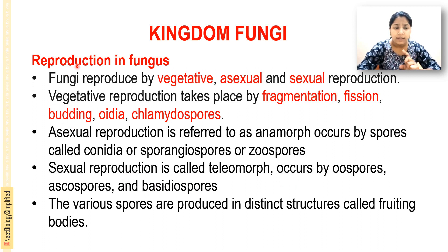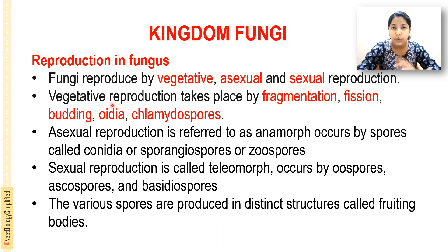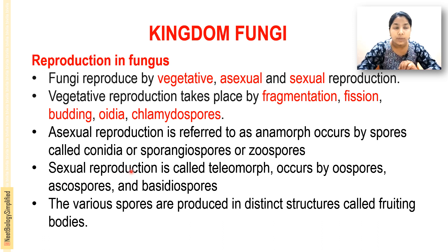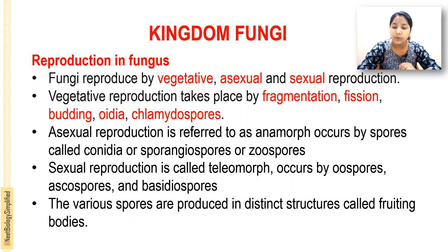Vegetative reproduction occurs by fragmentation, budding, fission, oedia, and chlamydospores. Asexual reproduction is called anamorph and occurs by spores called conidia, sporangiospores, or zoospores. Sexual reproduction is called telomorph and occurs by oospores, ascospores, and basidiospores. Various spores are produced in a distinct structure called a fruiting body.